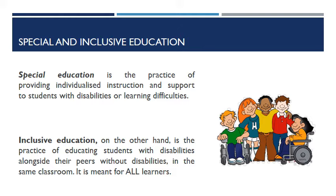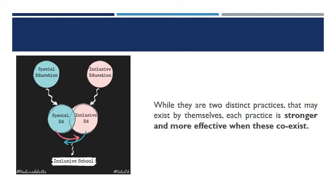Inclusive education, on the other hand, is the practice of educating students with disabilities alongside their peers without disabilities in the same classroom — it is meant for all learners. So we know the difference: special education emphasizes individualized instruction and support for learners with disabilities, while inclusive education mainstreams both learners with disabilities and regular learners in a regular setting. Why are these two concepts related?